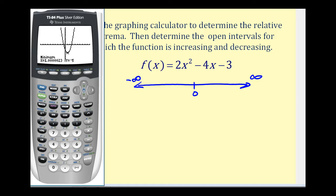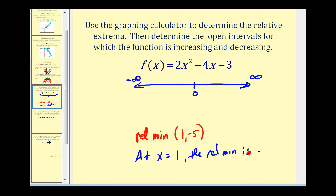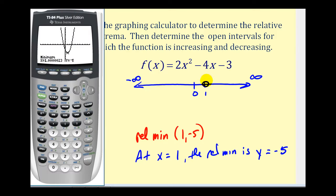The relative minimum occurs at the point one, negative five. Some texts like to identify the relative minimum as an ordered pair, but remember that the x coordinate is the location and the y coordinate is the minimum value. So we could say that at x equals one, the relative minimum is y equals negative five. Since we know the function changes from decreasing to increasing at x equals one, we'll use that point to determine the intervals. We'll make an open circle at positive one on the number line, then go back and look at the graph.